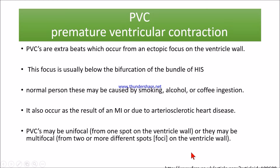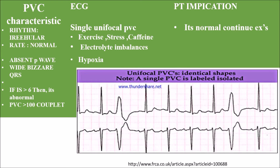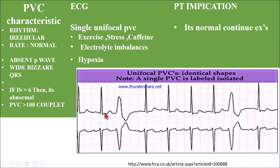Let's see some PVC changes on ECG and physiotherapy implications. The characteristics of PVC: rhythm will be irregular, rate is normal. Here we can see the absence of a P wave — we cannot recognize it. The QRS complexes are not equal. If PVCs are greater than 6, then it's abnormal.